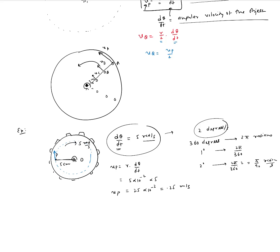If we ask for the velocity of point Q, located halfway at 2.5 centimeters from O, then velocity of Q = R_OQ × dθ/dt = R_OQ × ω. Since R_OQ is half of R_OP, the velocity of Q is half the velocity of P — that's 0.25/2 meters per second. This shows how linear velocity scales with distance from the center.